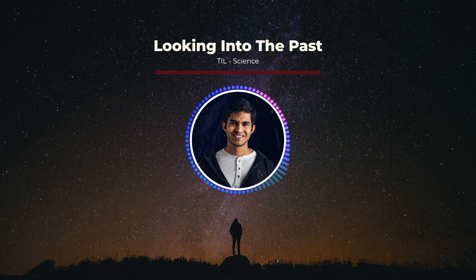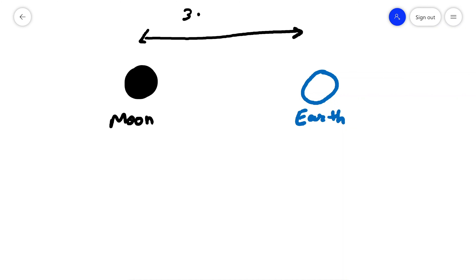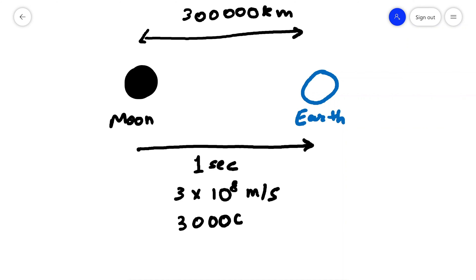Well, kind of yes. Here we are on the earth, and somewhere far away there's the moon. The distance between the earth and the moon is about 300,000 kilometers, and light that leaves the moon takes about one second to cover this distance. The speed of light is 3×10⁸ meters per second, which means 300,000 kilometers per second. So light from the moon reaches us one second later.